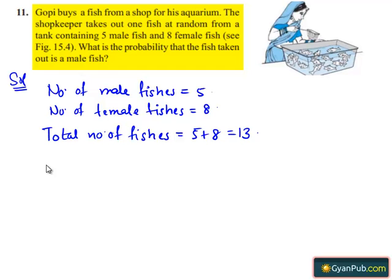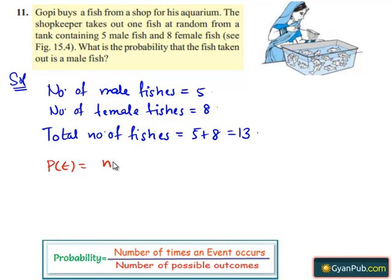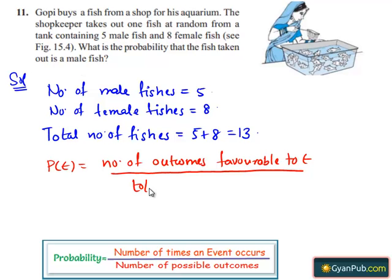We know that probability of any event P(E) equals the number of outcomes favorable to event E divided by total number of possible outcomes.